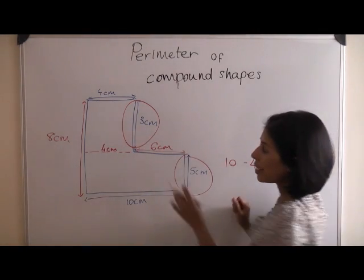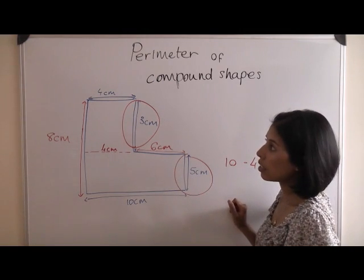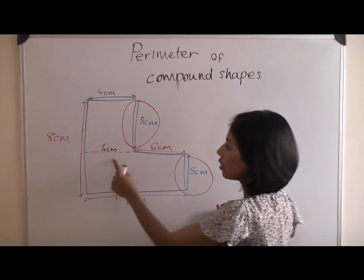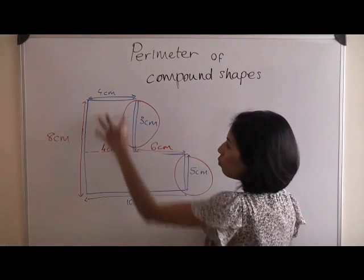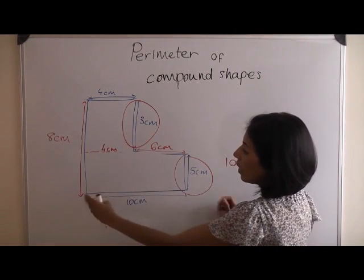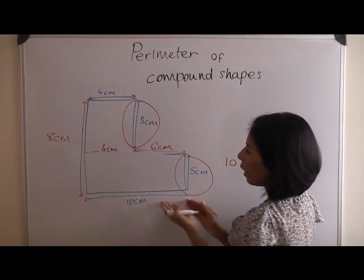So now you know that that missing length has got to be six centimeters. And you can check this because you know that six and four is ten. That line, if brought down, would be exactly the same as the line parallel to it.